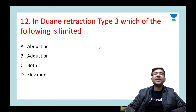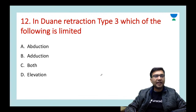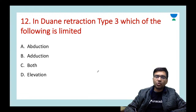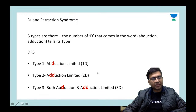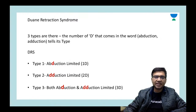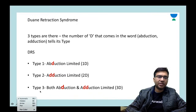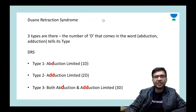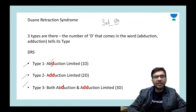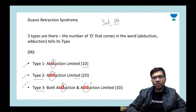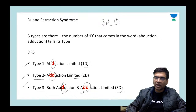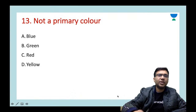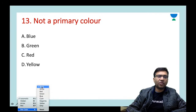Next question: in Duane retraction syndrome type 3, which movement is limited? Options: abduction, adduction, both, or elevation. Duane retraction syndrome is a misinnervation syndrome between the third and sixth nerves. In type 1: abduction is limited (1D — one direction). In type 2: adduction is limited (2D). In type 3: both adduction and abduction are limited (3Ds involved).